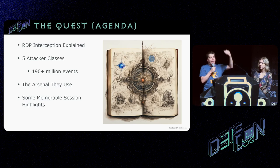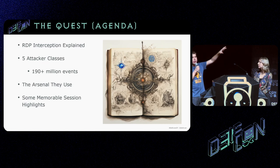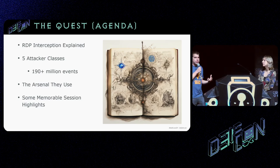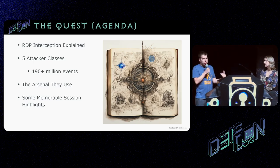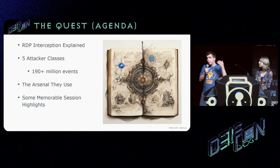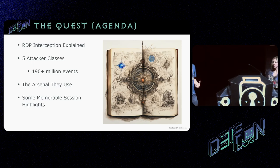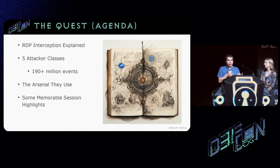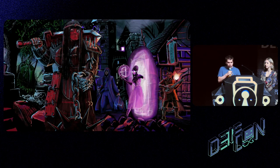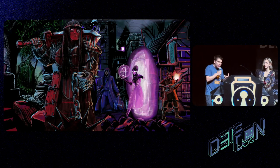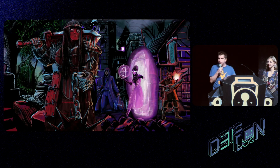We're then going to dive into attacker classes — barbarians, thieves, and stuff like that. We summarized over 190 million events — an event is basically a log line, a JSON log. We're going to summarize what we collected, then talk about the tools the hackers use — their weapons, their swords and axes — and then show some really cool, interesting, memorable sessions.